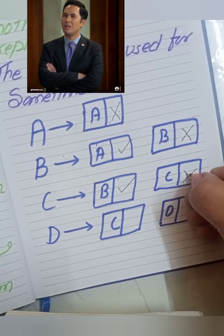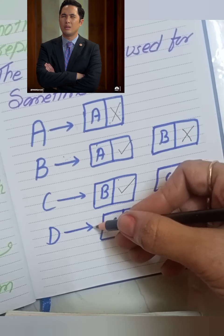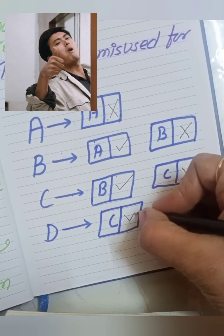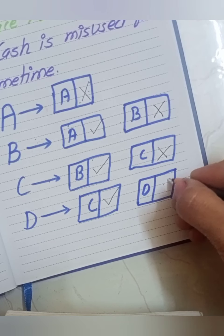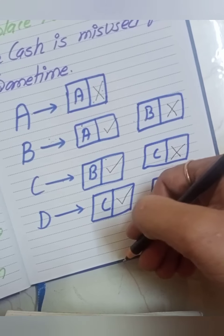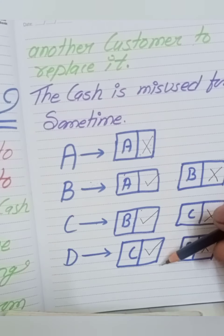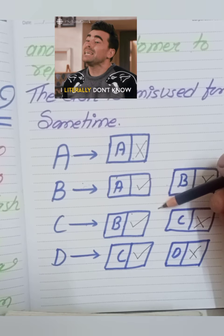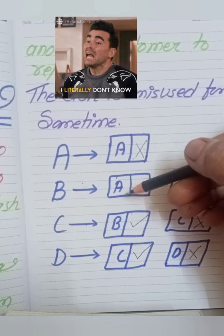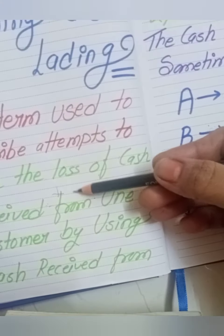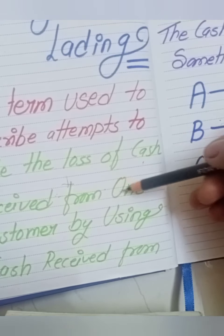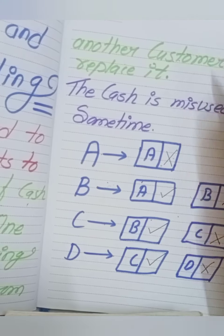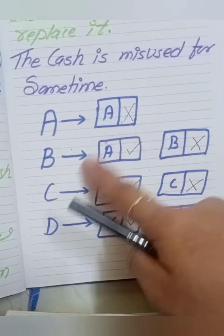Customer D comes next. What did C do? Put money in the account. But D did not put money. Slowly, slowly, all are adjusted and no one knows that there is fraud happening. It is very challenging to detect teeming and lading. Here the fraud hides the losses of cash received from one customer by using cash received from another customer to replace it.